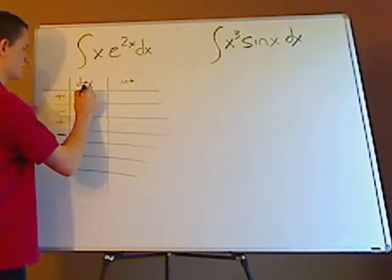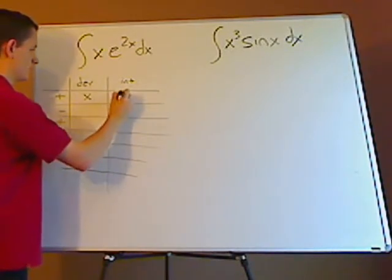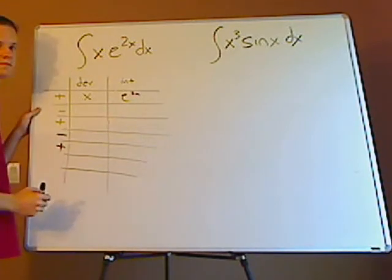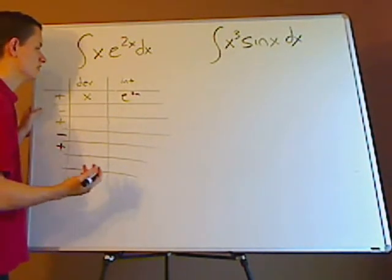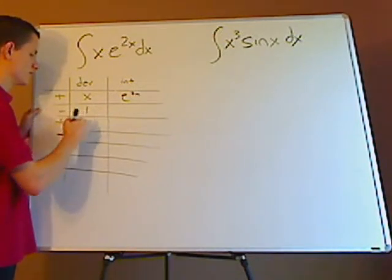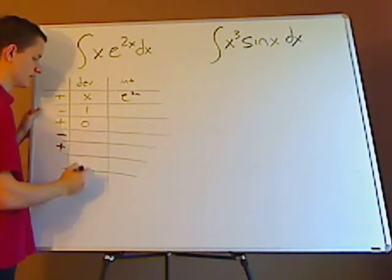Now with this problem, first you write both of them here. Pretty much you can do this in your head, right? What's the derivative of x? One. What's the derivative of one? Zero. And it continues being zero.